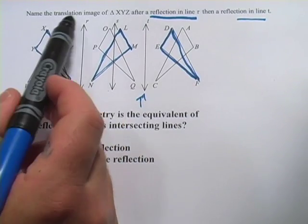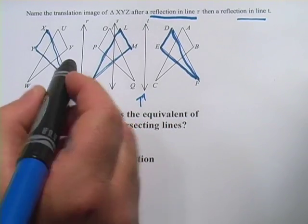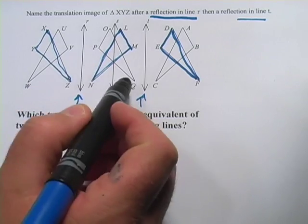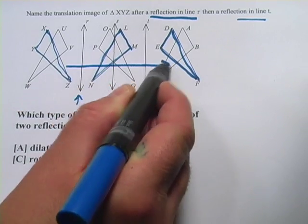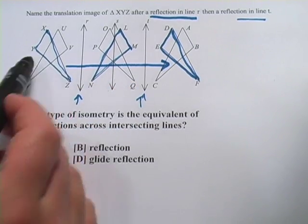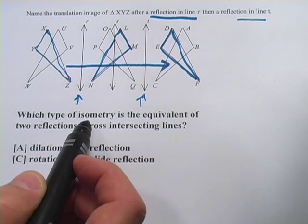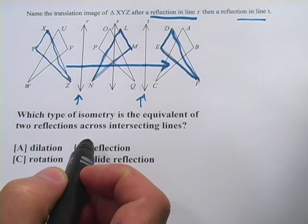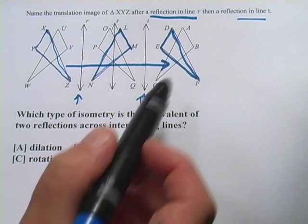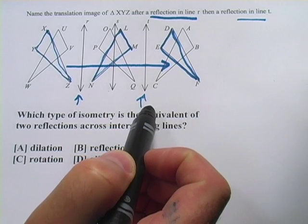So when they say here, name the translation image, it's because two reflections over parallel lines sort of amounts to a translation. You're just taking this thing and sliding it across. It amounts to the same thing, even though we did two reflections. So the correct answer here would be triangle DEF.